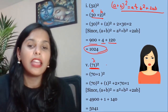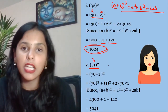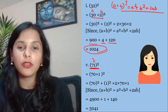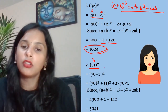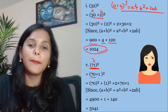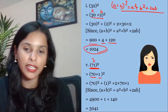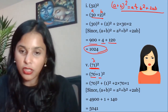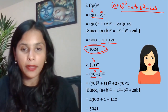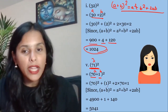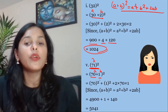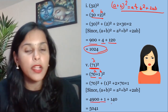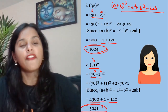For the square of 71: write as (70 + 1)², where a = 70 and b = 1. Apply the identity: 70² + 2(70)(1) + 1² = 4900 + 140 + 1 = 5041.